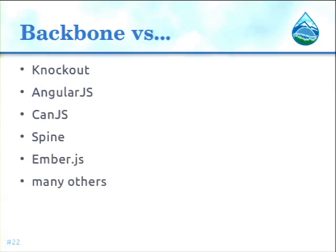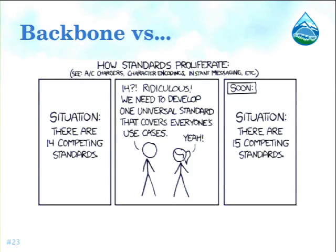Backbone.js is not the only one — there are lots of competitors, and you may wonder why Backbone.js. This slide describes how a new framework appears: somebody wants to create a framework that covers all existing standards, so they do it, and a new framework appears. But Backbone was one of the first MVC JavaScript frameworks, and there are now about 100 extensions. So if something is not in core, you can probably find it as an extension.